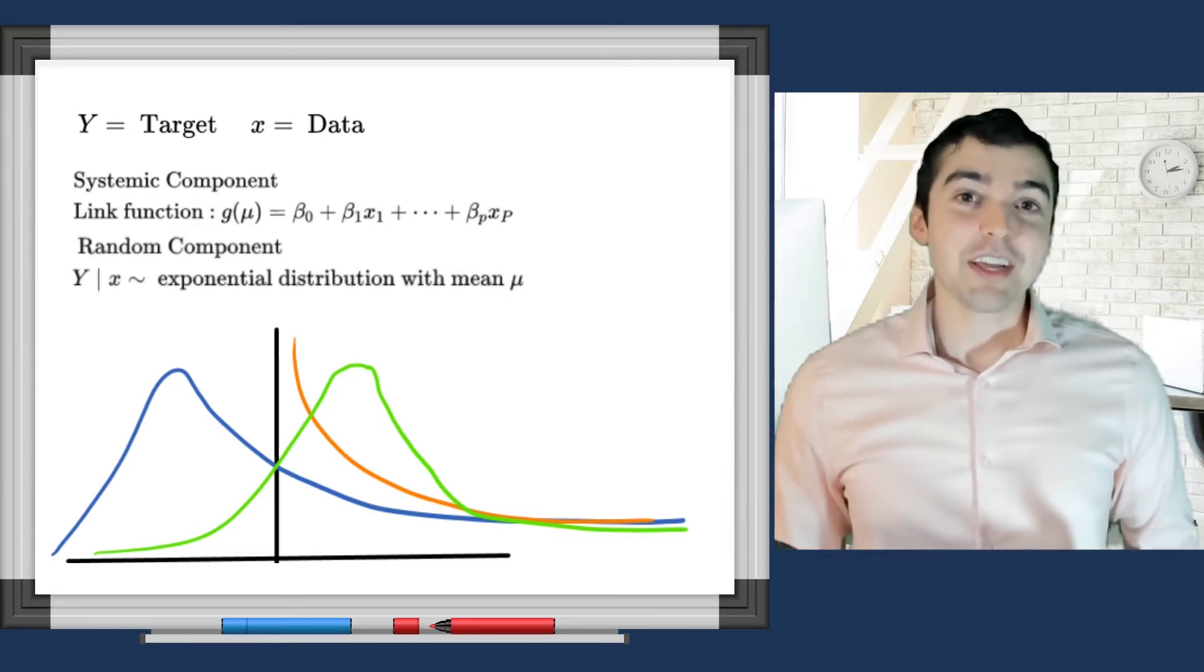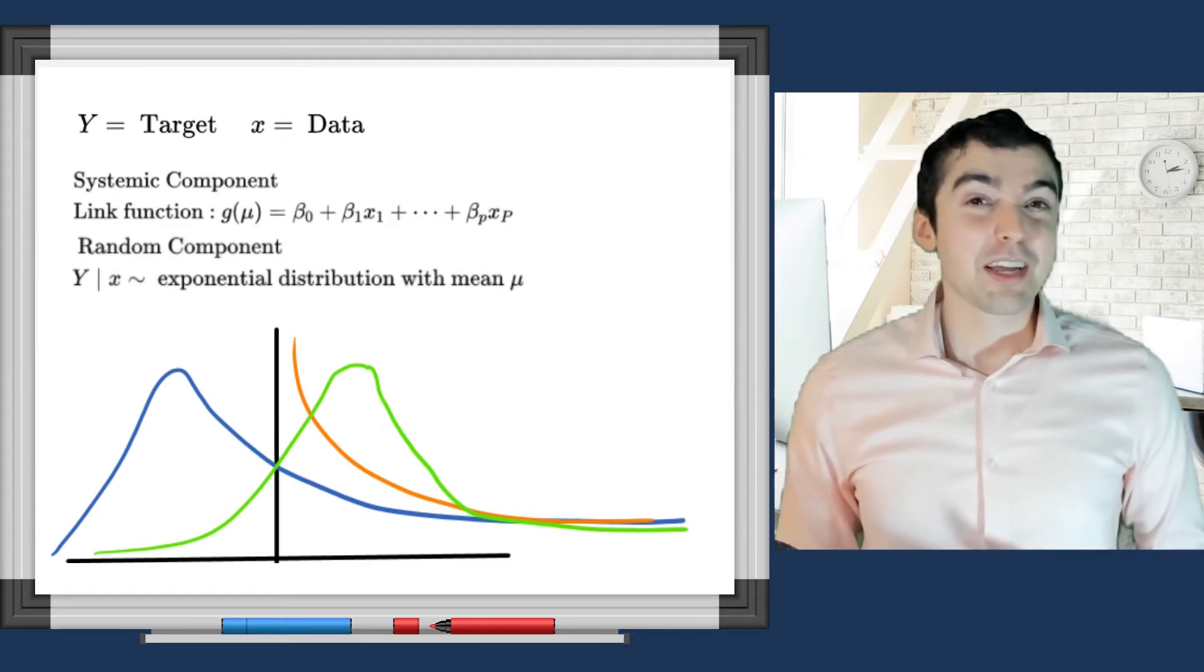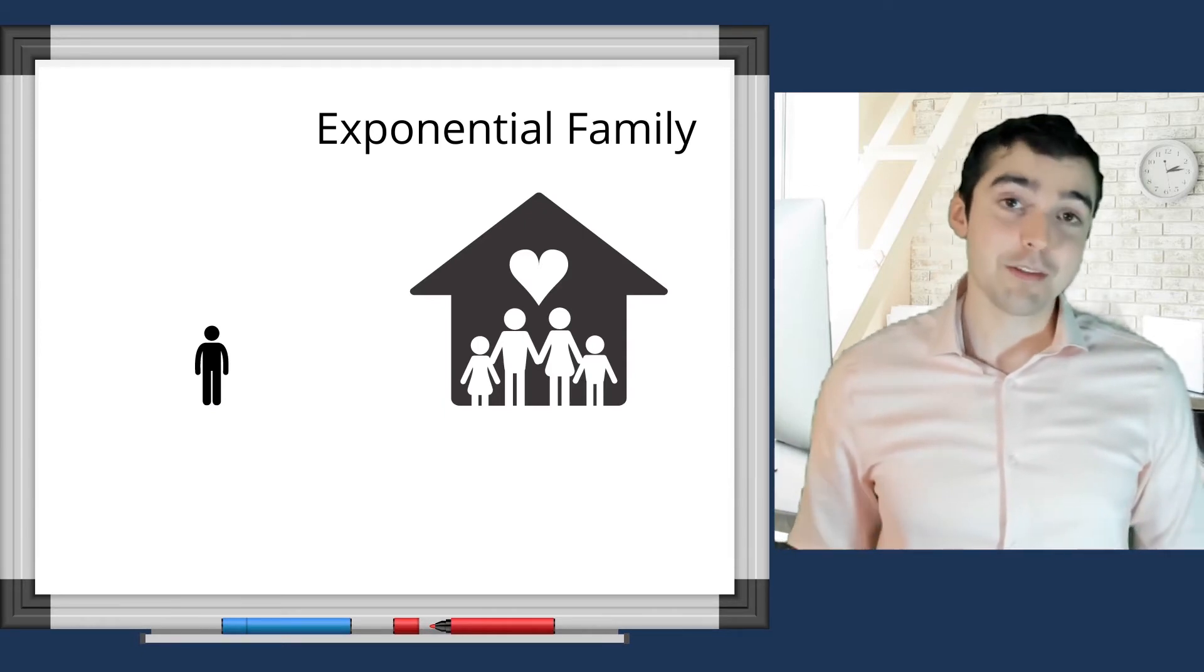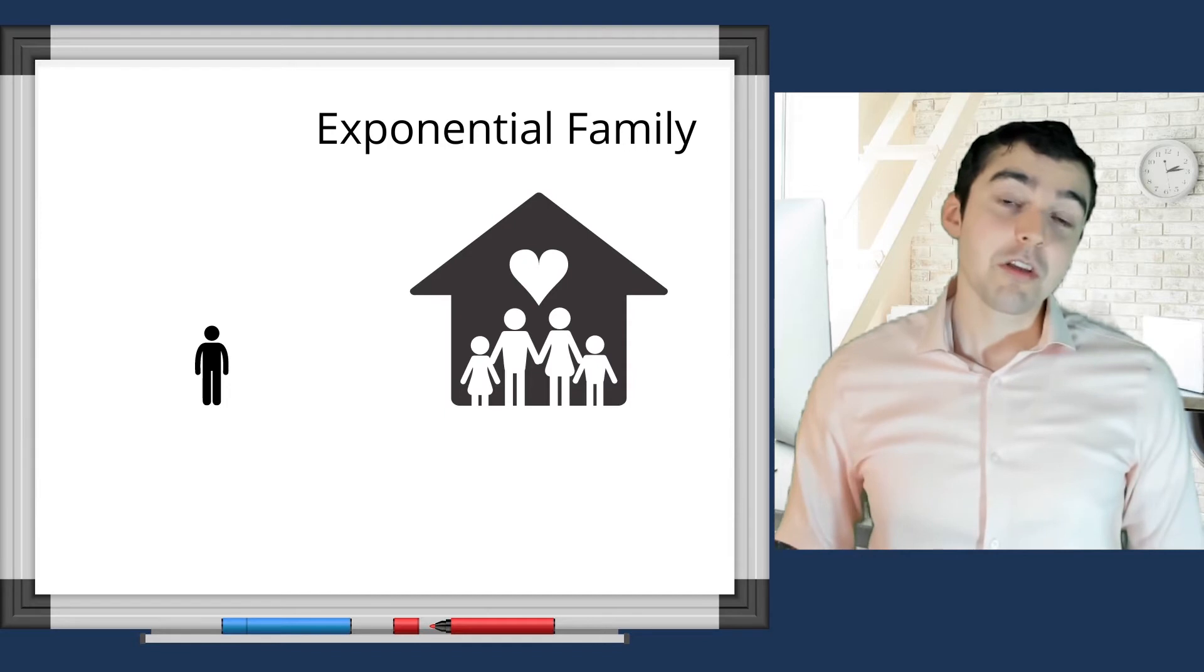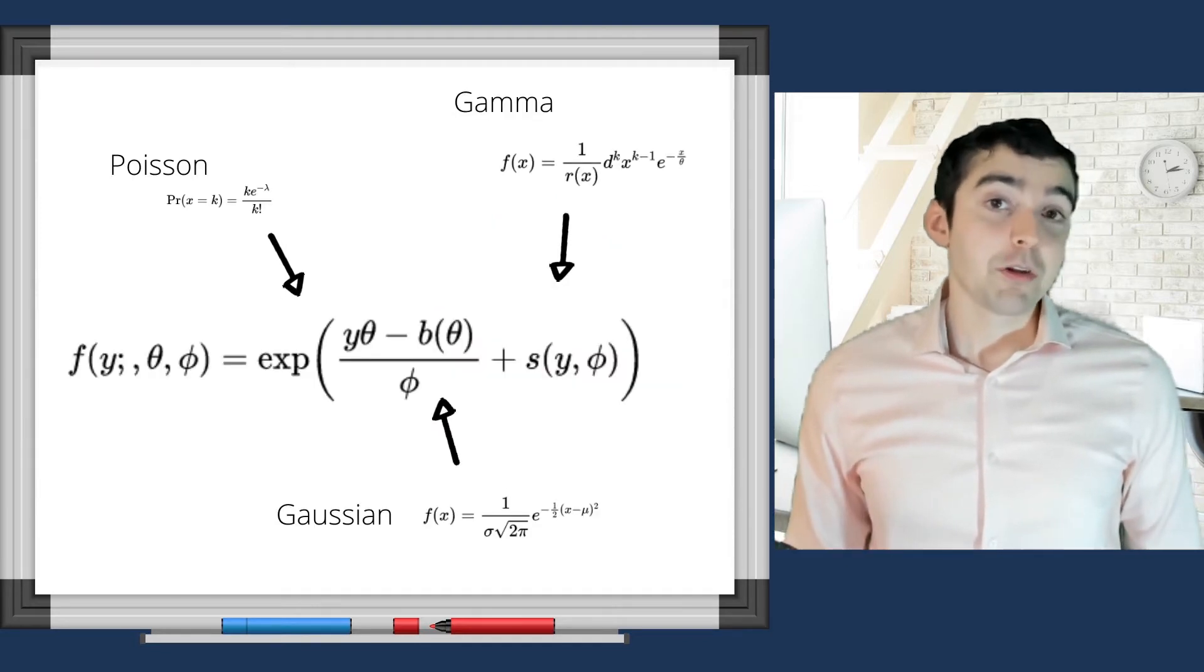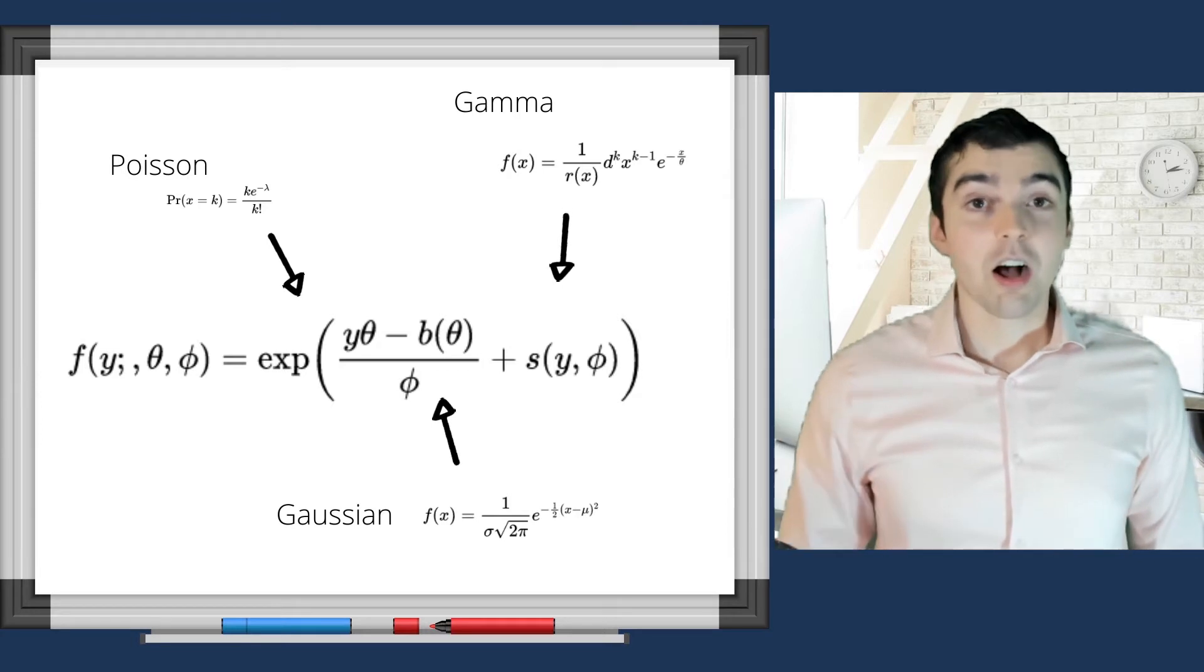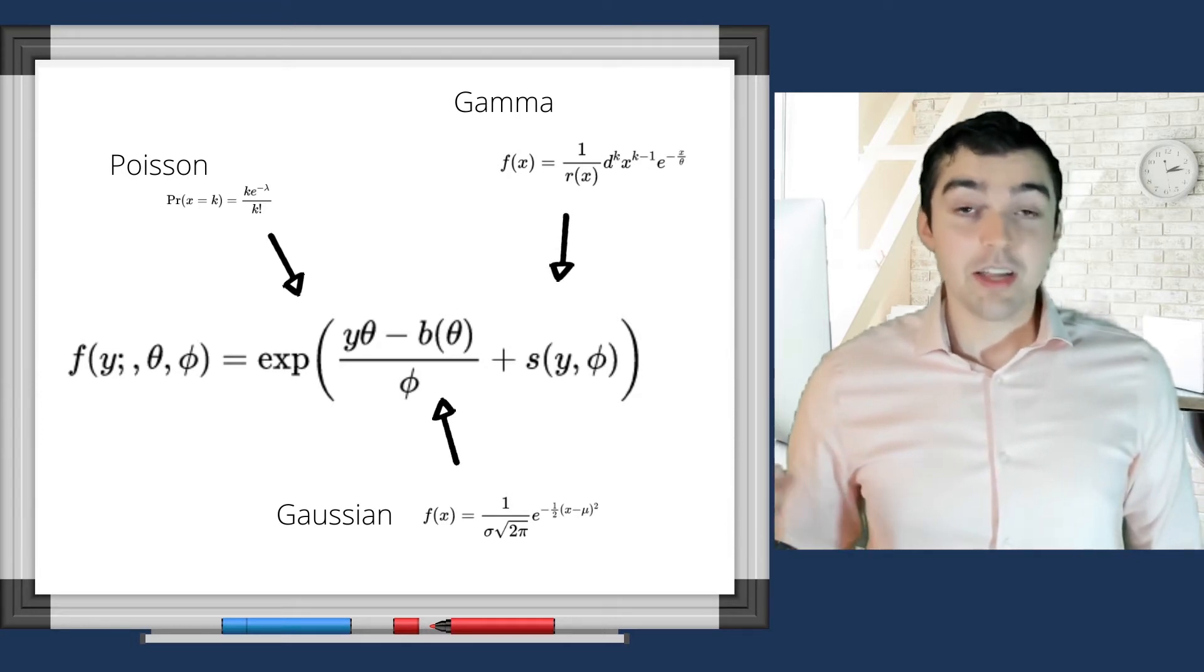Now, I know what you're thinking. Exponential? That's like the exponential distribution? No, this is actually referring to a whole family of distributions that includes what you were already familiar with. The binomial, the Poisson, the Gaussian, Gamma.